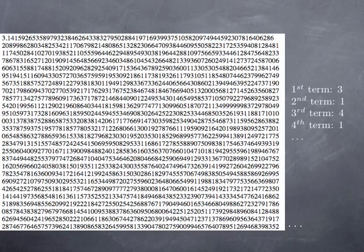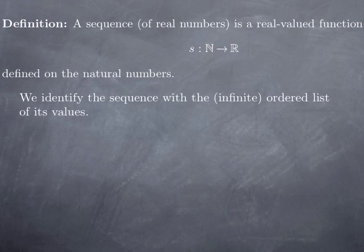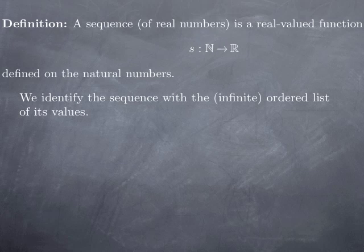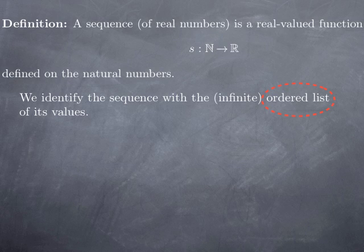So how do we formalize this? We're going to define a sequence of real numbers as a real-valued function defined on the natural numbers. Symbolically, s from ℕ to ℝ — the ℕ stands for the set of natural numbers and the ℝ stands for the set of real numbers. So this is a function from the natural numbers to the real numbers, and we identify the sequence with the infinite ordered list of its values. The order is implicit when we look at the range of the function, because there is a natural order on the natural numbers which is transported onto the images.